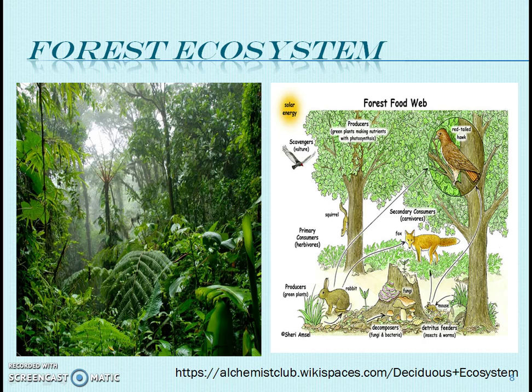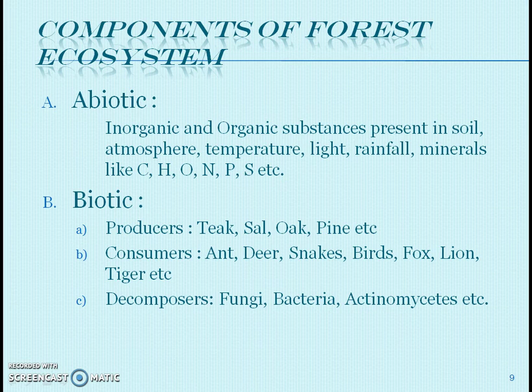Components of forest ecosystem: The ecosystem is divided into abiotic and biotic components. Abiotic components include inorganic and organic substances present in soil. Climate is different for each type of forest ecosystem — for example, coniferous, deciduous, or tropical rainforest each have different climates. Temperature and light penetration also vary. Minerals like carbon, hydrogen, oxygen, and nitrogen are also present in the forest ecosystem.